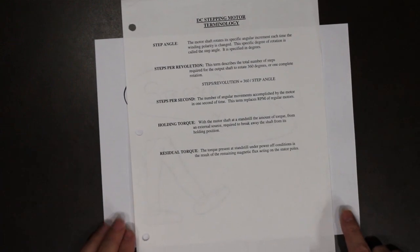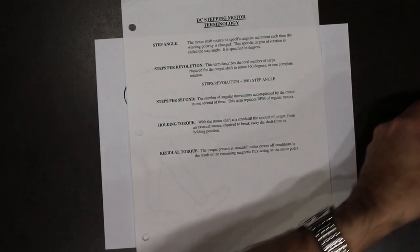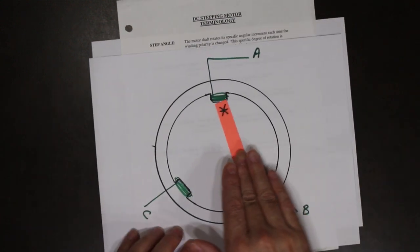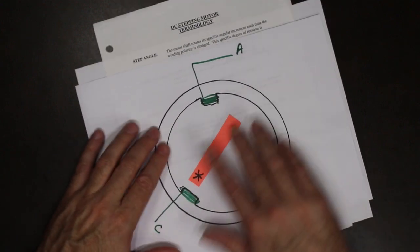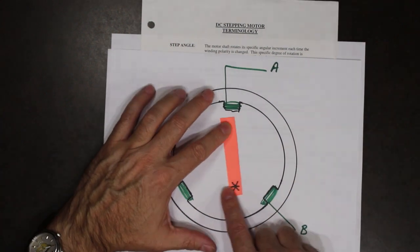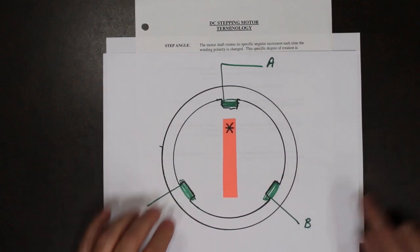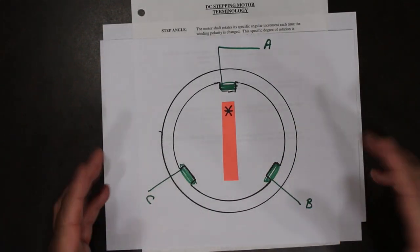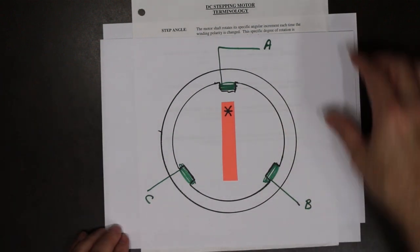The next term is steps per revolution. This describes the total number of steps required for the output shaft to rotate 360 degrees, or one complete rotation. If I started at A and made one step, two steps, three steps, four steps, five steps, six steps — how many steps to go around one time? In this example, this is six steps per revolution.